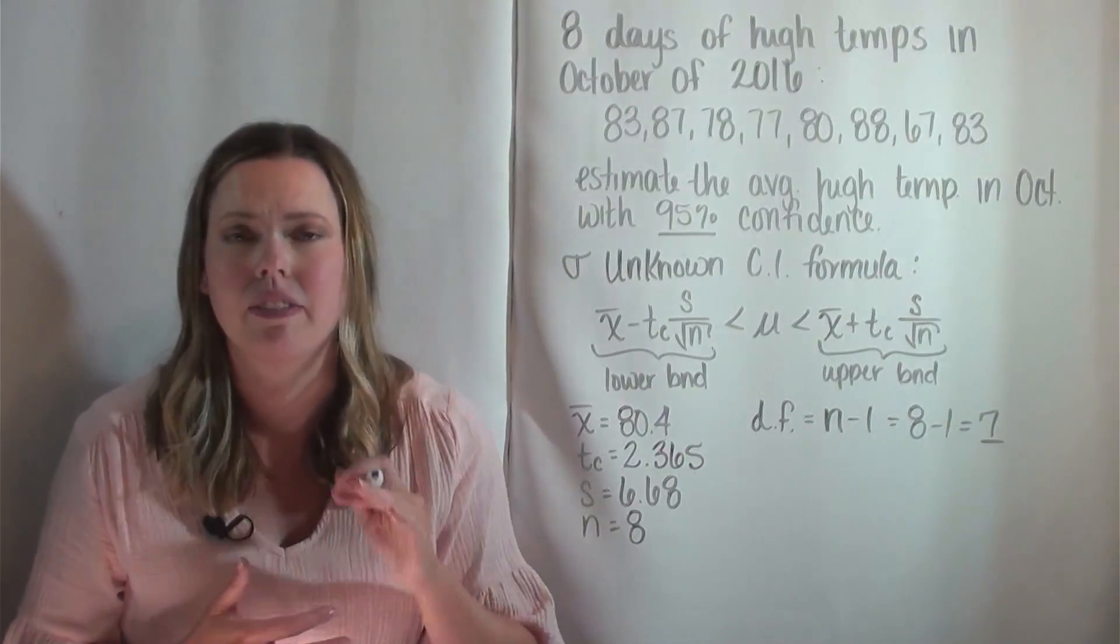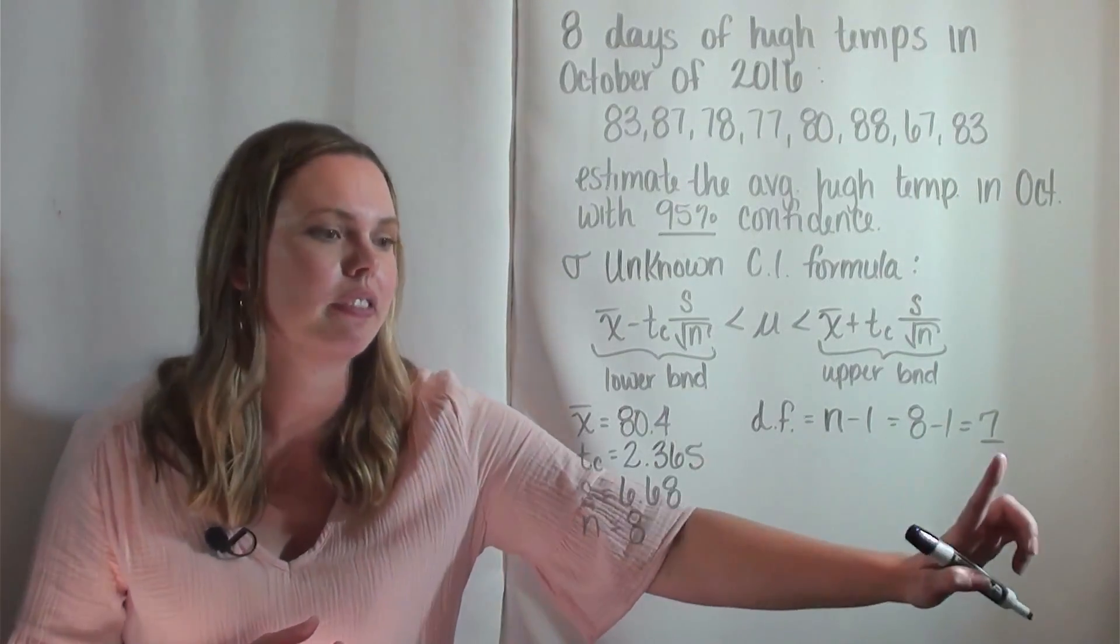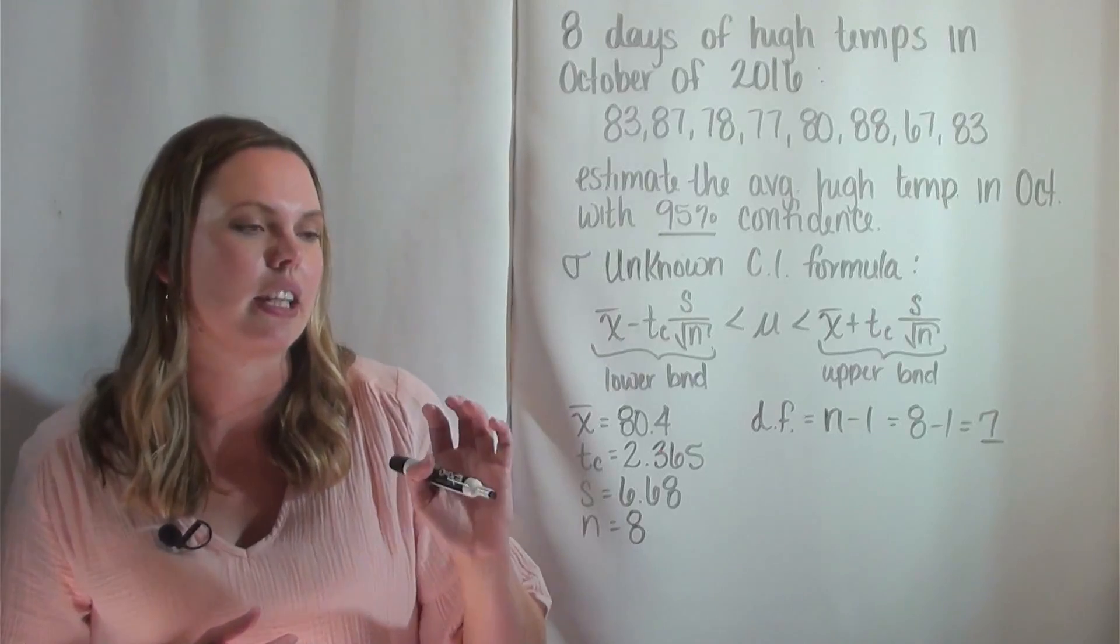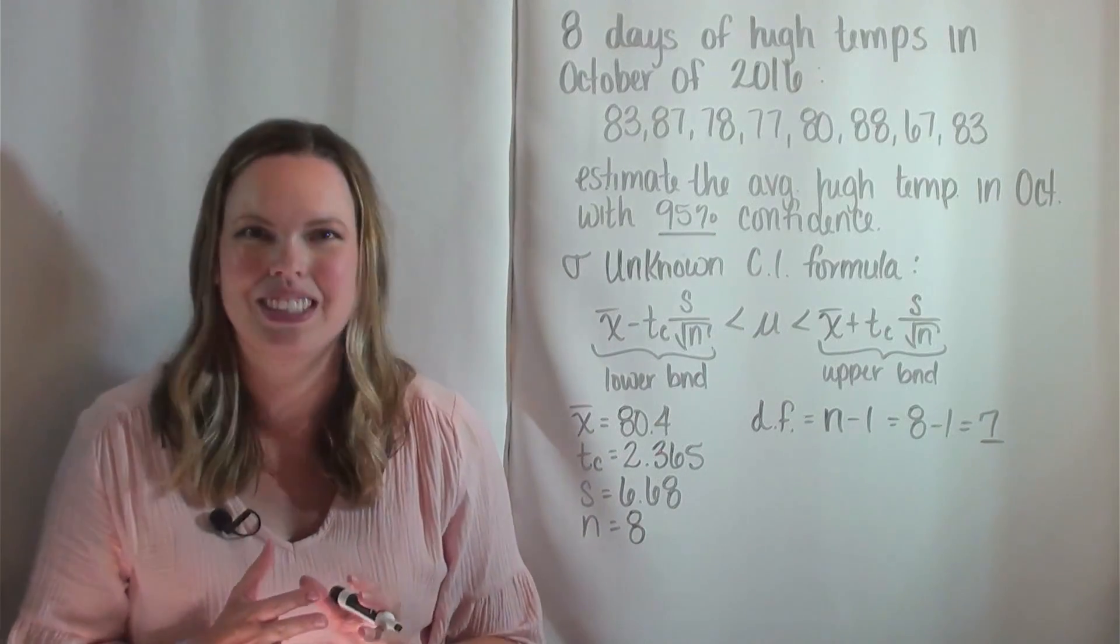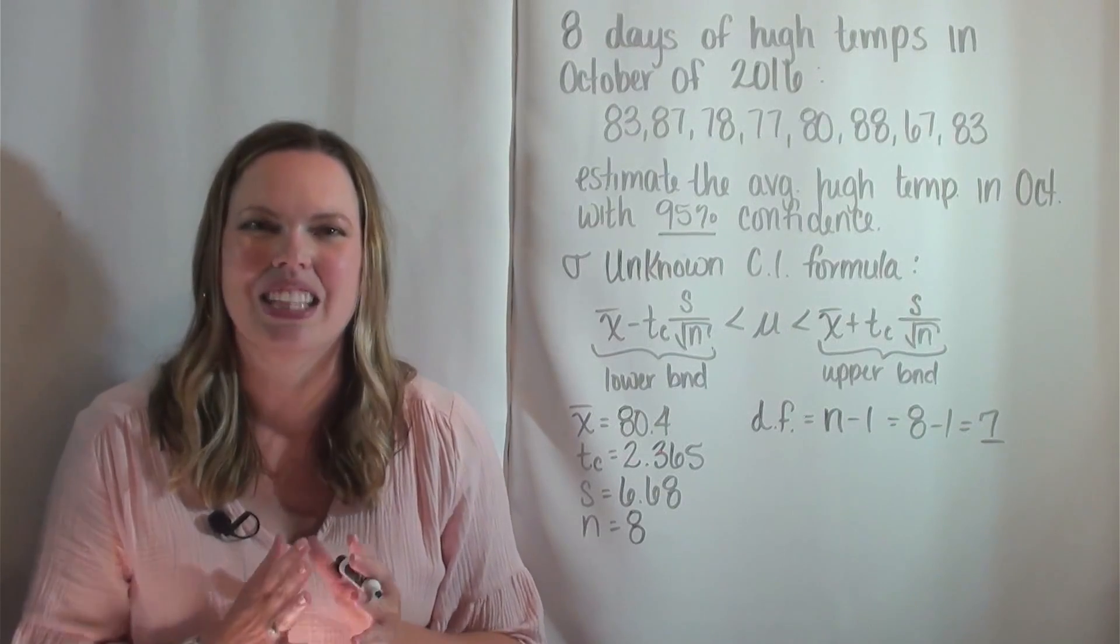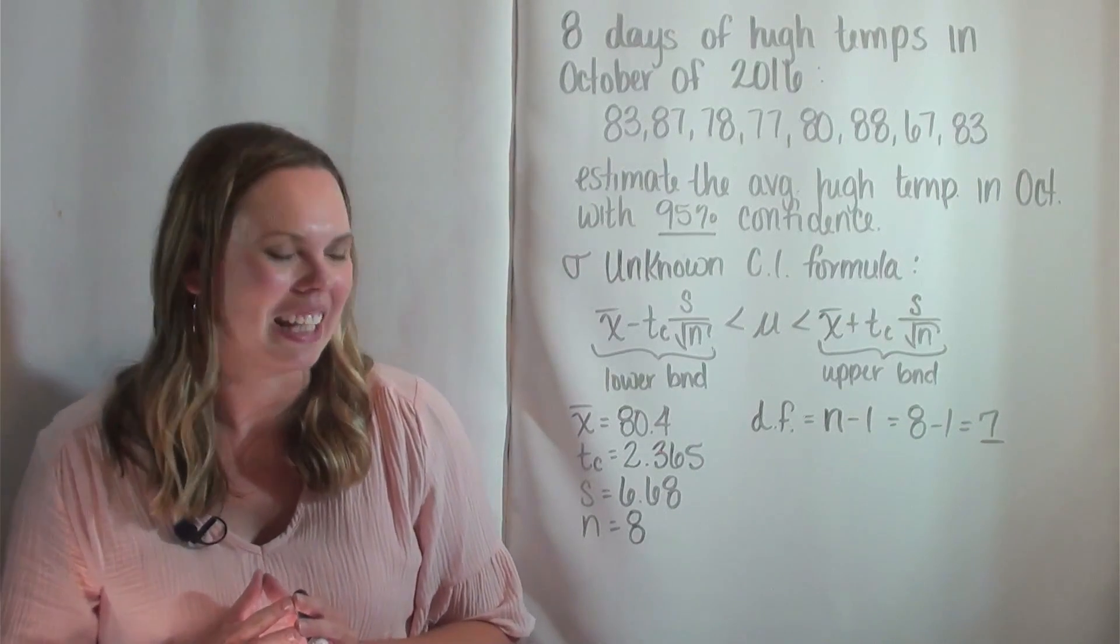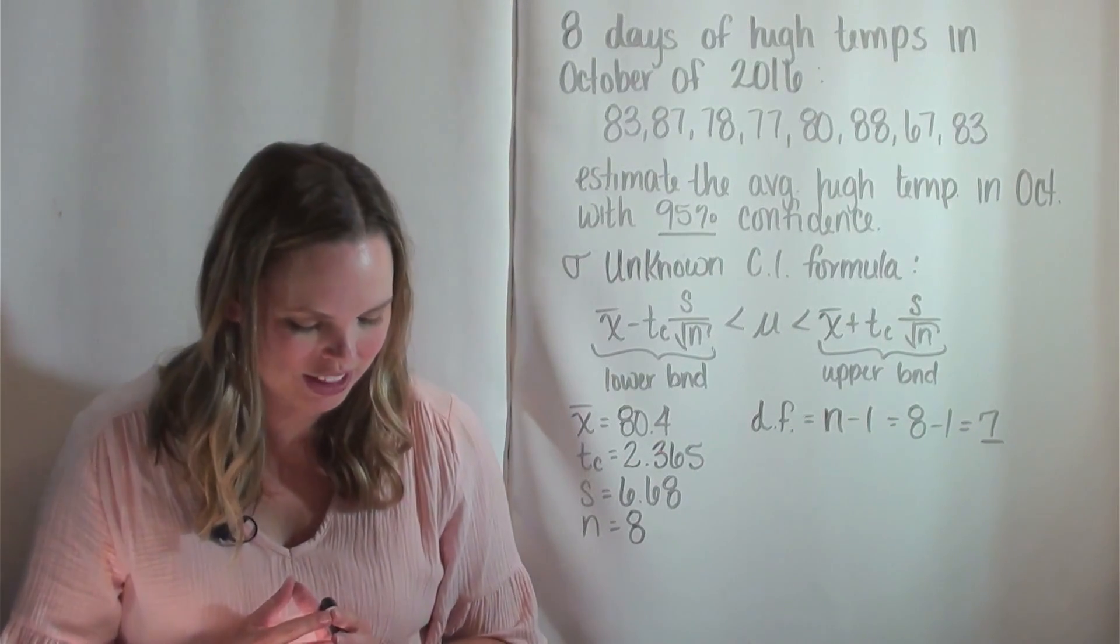Again, that's from a chart that I've linked below using the degrees of freedom and the confidence level of 95%. We have to use the T sub C when sigma is unknown, like it is here.